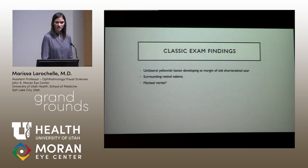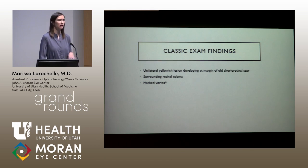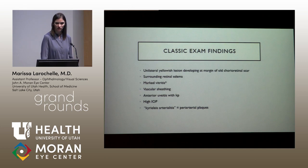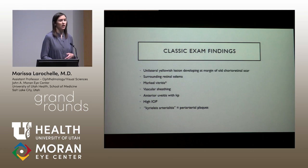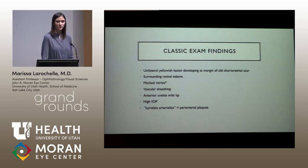Exam findings include marked vitritis — though sometimes it's just a clump of vitreous cells overlying the area of activity, or in immunocompromised patients there can be a lack of vitritis. Vascular sheathing can be seen separate from the area of activity, as on fluorescein angiography. Anterior uveitis can show fine KP or mutton fat KP. High IOP can be classic, and then there are peri-arterial plaques.